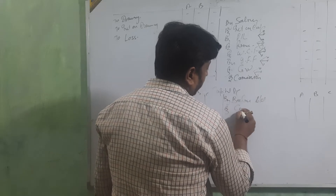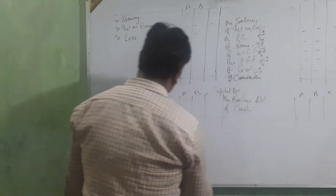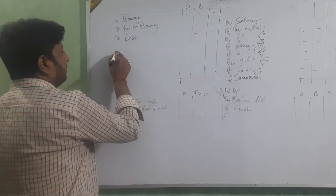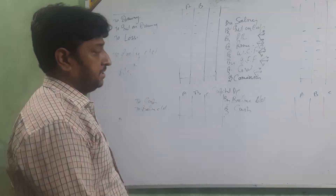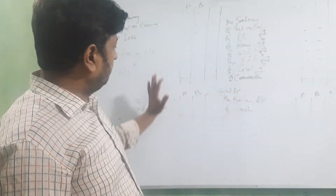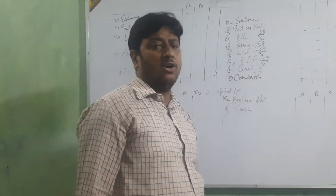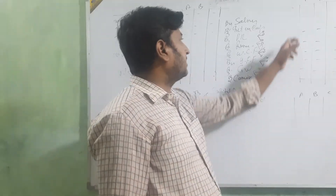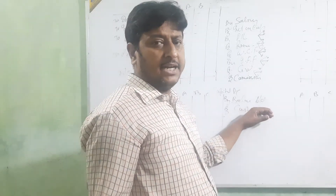In the capital account: by balance brought down, by cash if they are adding new capital, and to cash if they withdraw capital, and then the new balance carried down. When capital is fixed, two accounts are made — one is the current account and one is the capital account. That capital balance is shown in the capital account, not in the current account.